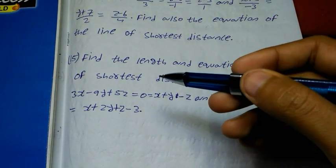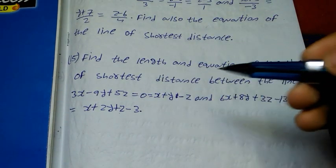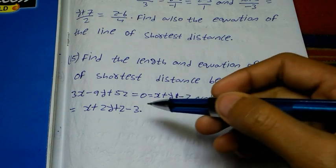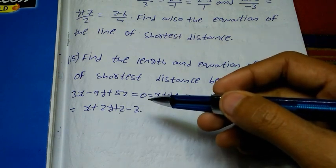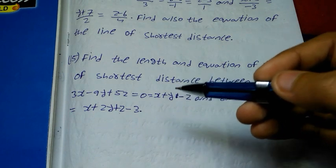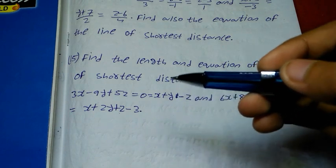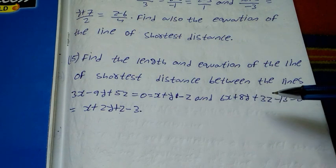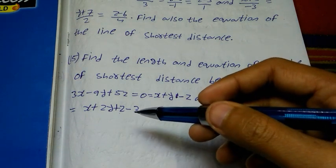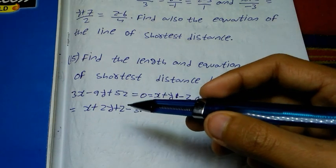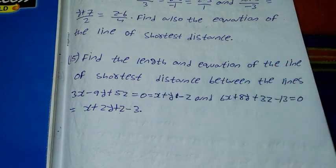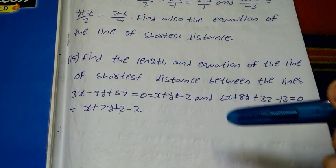Number 15 question: find the length and equation of the line of shortest distance between the lines x minus 9y plus 5z equal to 0, x plus y minus z equal to 0 and 6x plus 8y plus 3z minus 13 equal to 0, x plus 2y plus z minus 3 equal to 0.